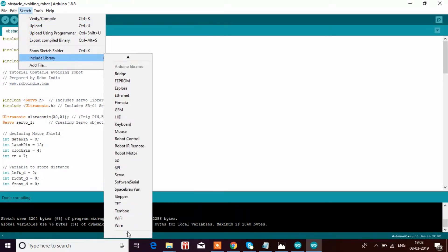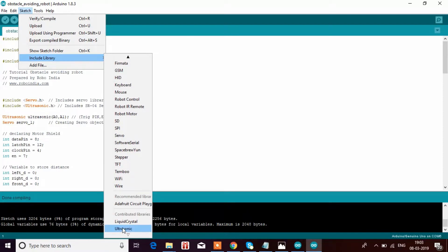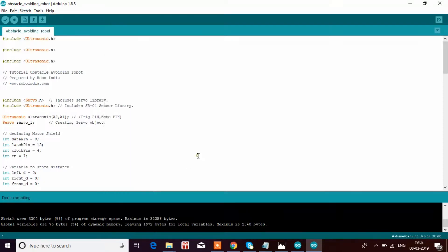After adding the library, you can go to Include Library and you can scroll down. You can see Contributed Libraries: Ultrasonic.